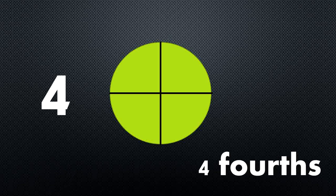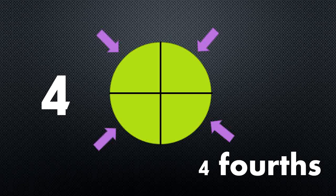Let's do this one more time, but I want to divide it into four sections. So I'll draw one line down from top to bottom and one line across from side to side. Now I can see that I have four sections, and that means I have four fourths. One, two, three, four. Each of my sections look the same and they are the same size. I used lines of symmetry again to divide my shape.